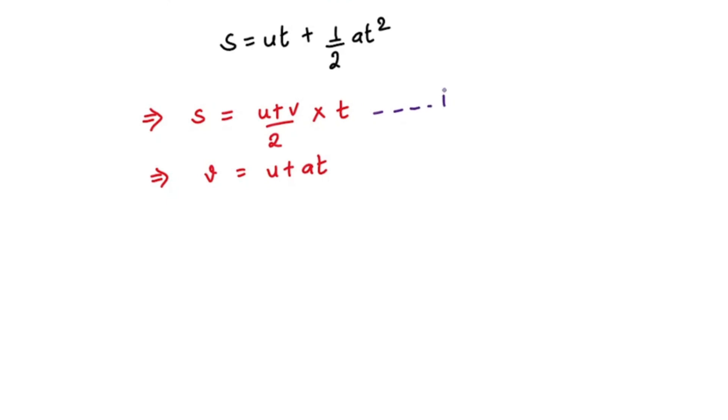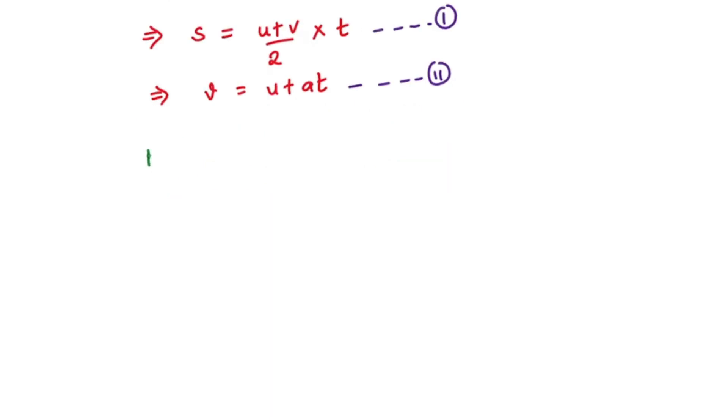By using these two formulas we can easily derive that equation. We are going to start from the first equation. So from equation 1, we have s = (u + v)/2 × t.